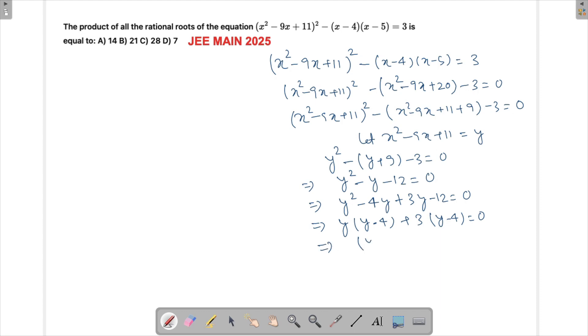So here actually we get two values of y: (y + 3)(y - 4) = 0. So either y could be equal to -3, this is one of the solutions, or y could be equal to 4.